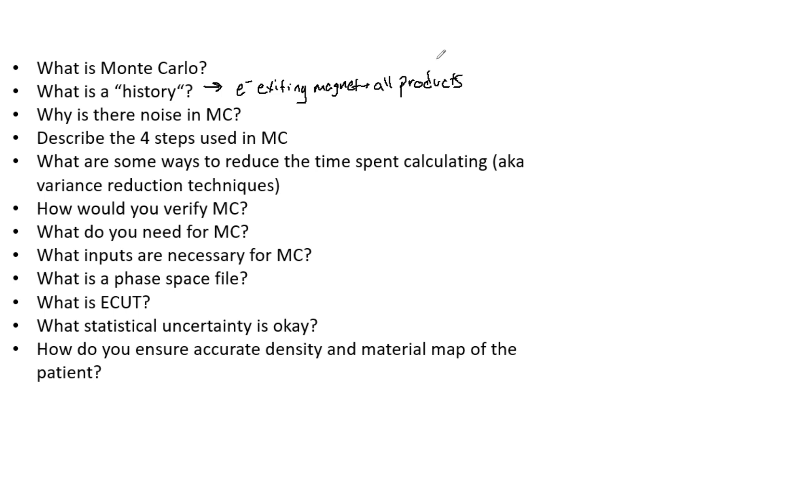Why is there noise? Because we are simulating individual particle history. Because we are simulating this single electron, iso lines are going to be a lot more jagged than the model-based ones. The noise here is proportional to one over √N where N is the number of histories.